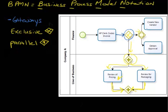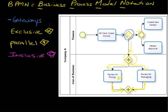The other type of gateway in our diagram is an inclusive gateway, represented by a diamond with a circle. An inclusive gateway is an OR condition — or OR situation. So once we've passed through this gateway and reached the next one, we may create the new vendor ID, or obtain approval, or both. Whatever conditions are met, it's going to take the appropriate paths based on those conditions.